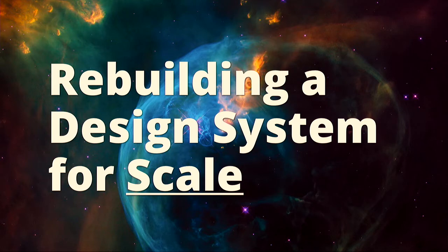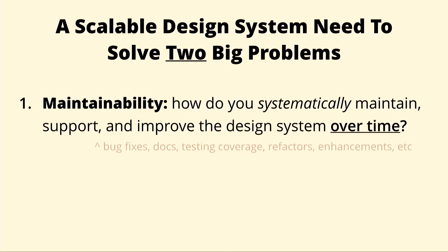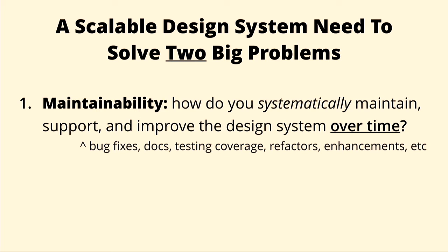Only this time, we had to directly address the main problems that tore our first design system apart. Scalable design systems need to solve two main problems. You have the maintainability problem: how do you systematically maintain your components, supporting them, documenting them, and improving them over time? This includes things like fixing bugs, getting testing coverage, refactoring new enhancements, etc.